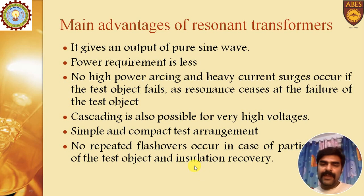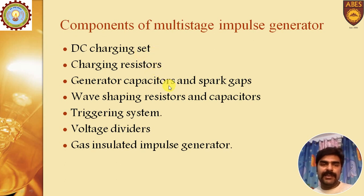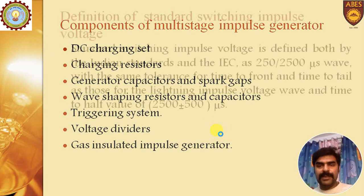The next question covers the components of a multi-stage impulse generator. The main components are: DC charging set, charging resistor, generator capacitor, spark gap, wave shaping resistors and capacitors, triggering system, voltage dividers, and gas-insulated impulse generator.